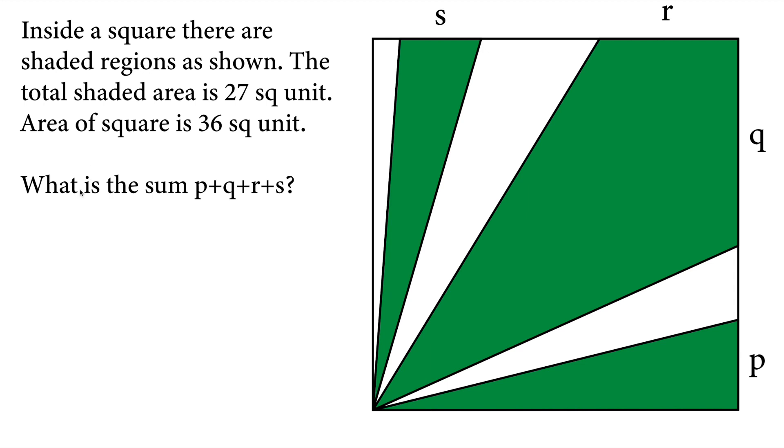So we know that area of square is, if we call side length A, and all sides should be equal to A, so A squared is 36, and therefore A should be 6 unit. So this side is 6, this side is 6. All side lengths are 6 units.